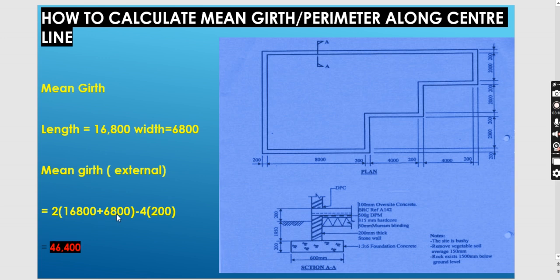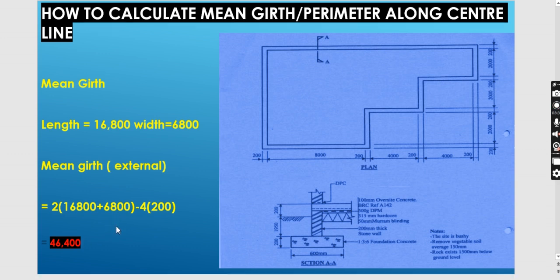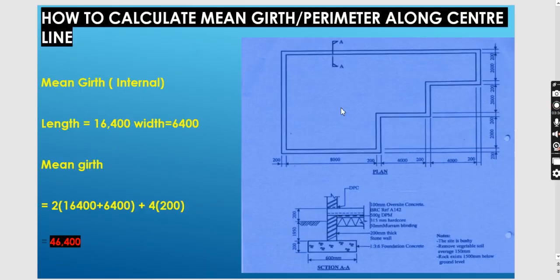So for the mini guard using external, it's going to be 2 into (16,800 plus 16,800), minus 4T. For the internal, we subtract the wall — that is 200 by 2, which is 400 — giving us 16,400. So the internal mini guard will be 2 into (16,400 plus 16,400) plus 4T. T remains the same whether you are using external or internal. That gives us the same result.